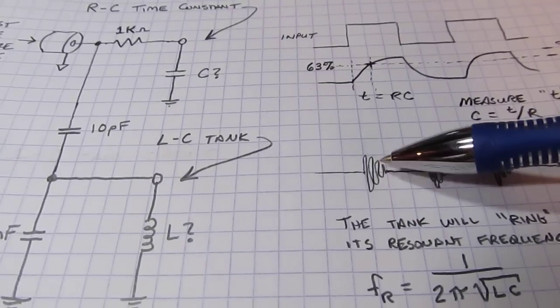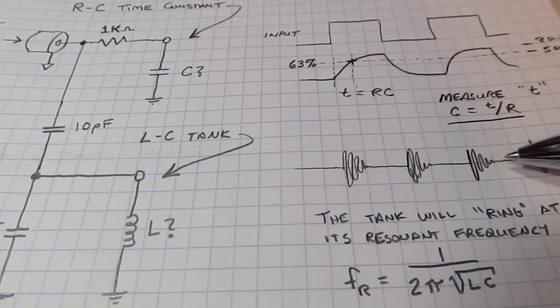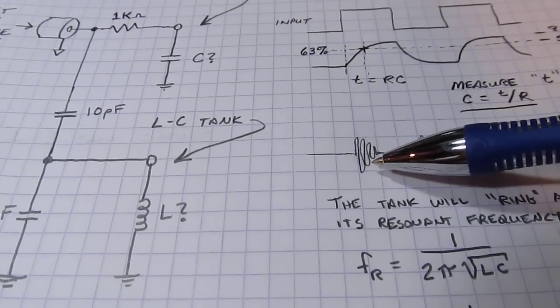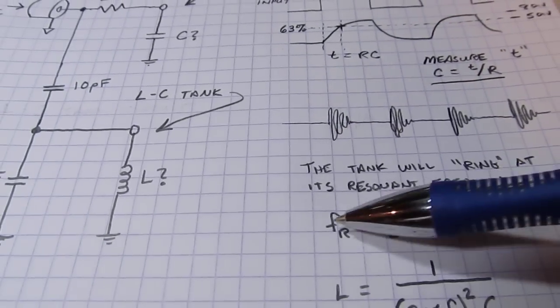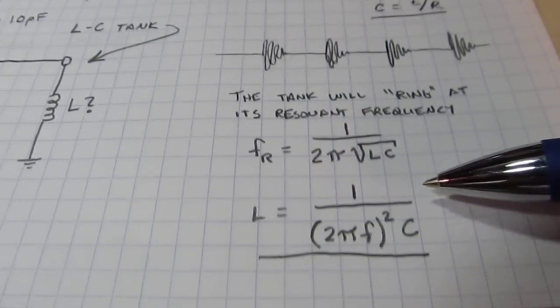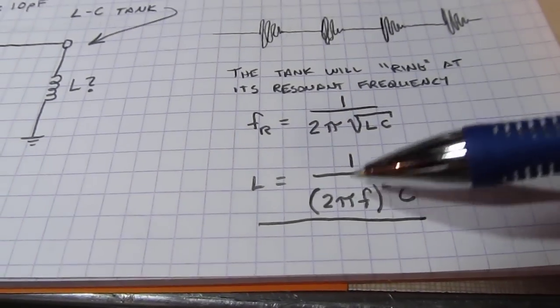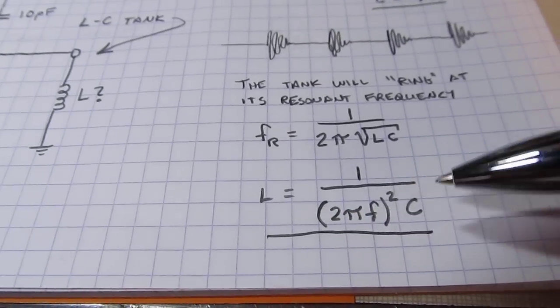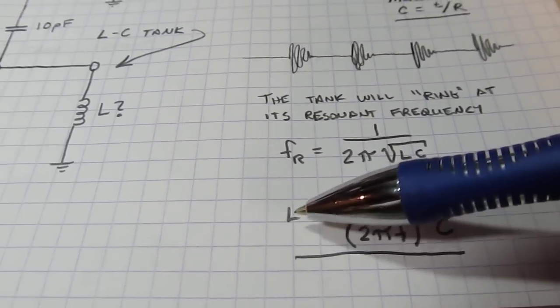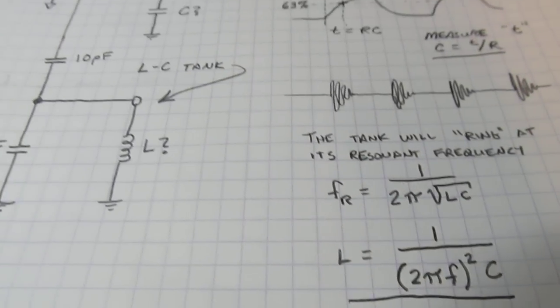Each of these edges is going to result in a ring, kind of like ringing a bell. All we need to do is measure that frequency. We can rearrange the formula for resonance of an LC tank circuit to this here. So if we measure the frequency and know the capacitor value, we plug them into this equation and we can calculate out the inductor. Let's take a look at how this circuit was built.